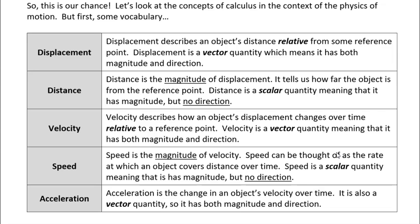But displacement is a vector quantity, and vector quantities have both magnitude and direction. So I am 10 miles west and you're 10 miles east — the displacement includes the direction. With linear motion, we usually use a positive or a negative sign to indicate direction. Imagine we draw a straight line between your position and my position with Minneapolis at the center, and we choose east to be the positive direction. Then you would be at positive 10 miles from Minneapolis, and I would be at negative 10 miles from Minneapolis.